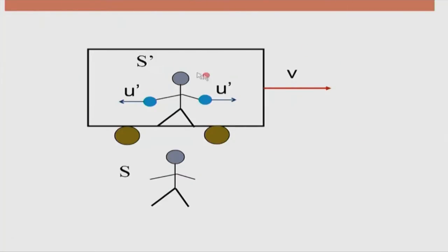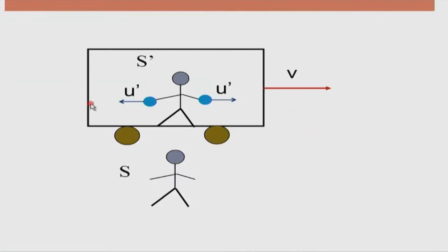One ball is thrown towards the front wall, and another towards the back wall. The front wall is the wall moving further ahead, and the back wall is moving backwards. The observer in frame S is on the earth, and the observer in frame S prime is in the compartment. According to the S prime observer, one ball is thrown with speed u prime in the forward direction and another with speed u prime in the backward direction. Eventually each ball hits its respective wall, which we call events. In special theory of relativity, our ideas are better described in terms of events.